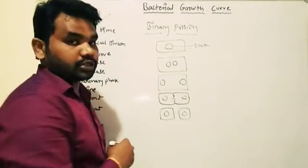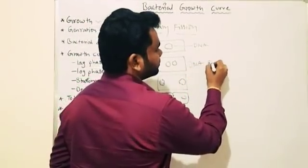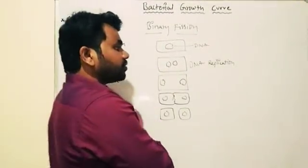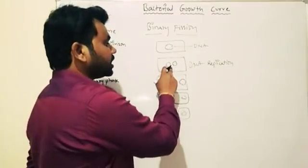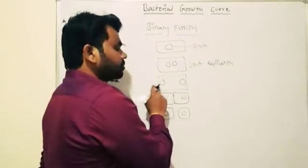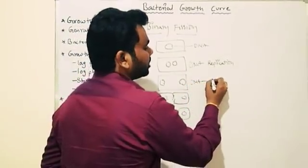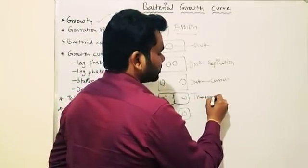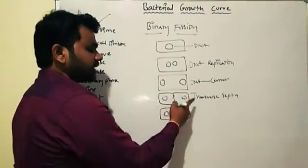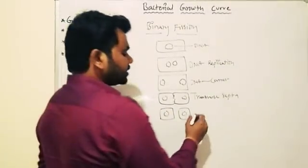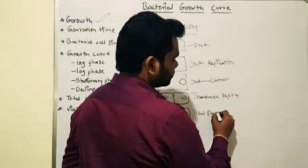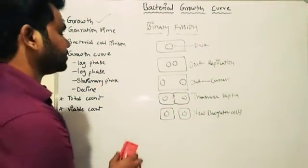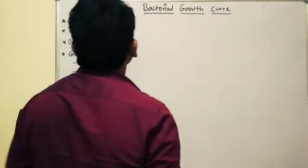Once the cell wall is formed, the cells will get separated. To summarize: first, DNA replication occurs — a single copy of DNA undergoes replication to produce two copies. Each copy moves to the corner of the cell. Then a transverse septa is formed, cell wall material gets deposited, and the daughter cells separate. This is how multiplication happens inside the bacteria.